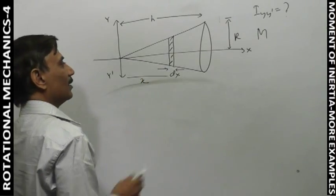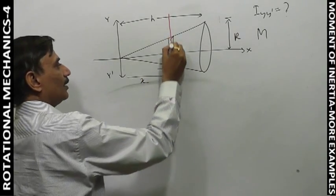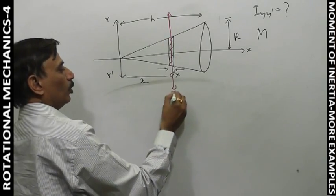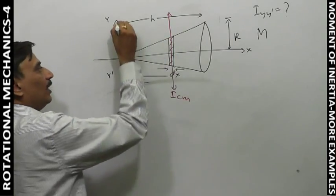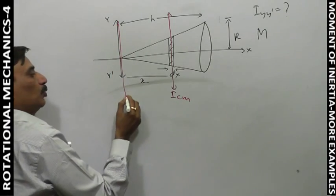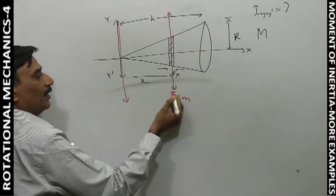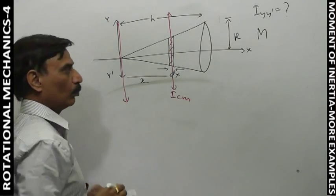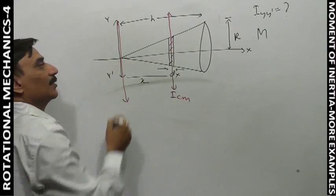First, we have this disc. We use the parallel axis theorem. Iyy' is equal to Icm plus dm into x squared.